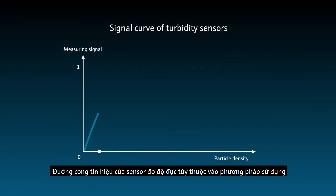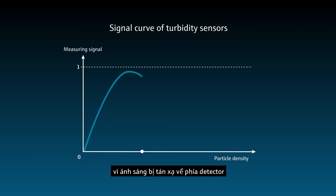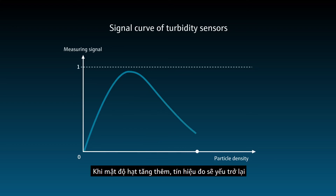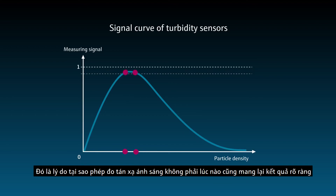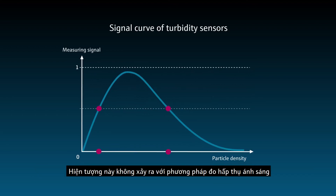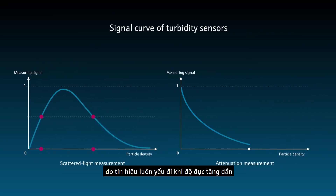The signal curve of turbidity sensors depends on the method used. With scattered light measurement, the signal curve rises up to a certain particle density because the light is scattered towards the detector. When particle density increases further, the measuring signal weakens again because the light is scattered so strongly that radiation no longer reaches the detector. This means scattered light measurement does not always deliver clear results. This phenomenon does not occur with attenuation measurement, where the signal consistently weakens with increasing turbidity.